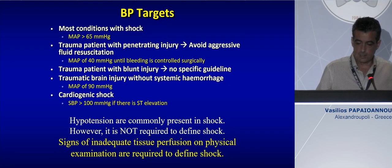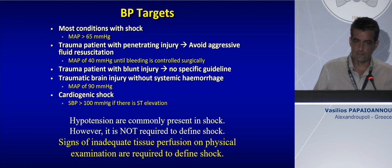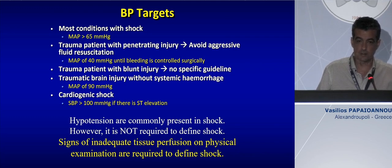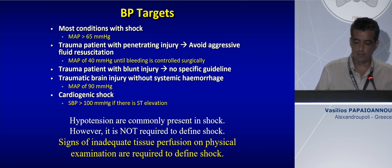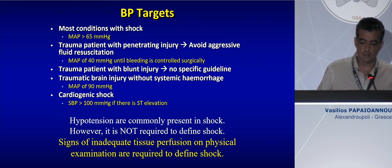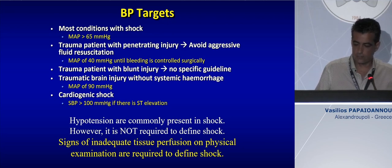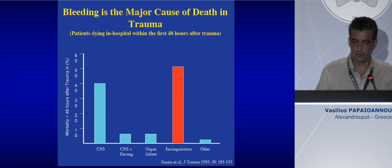The targets of blood pressure in shock patients in the first hours in the ICU are quite modest. Most guidelines suggest a MAP of around 65 mmHg in most cases of shock. Trauma patients with penetrating injury should have a low blood pressure of 40 until bleeding is surgically controlled, whereas patients with traumatic brain injury without systemic hemorrhage should have a MAP of around 90 mmHg. Hypotension is significant for the diagnosis of shock, but it's not necessary.